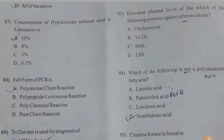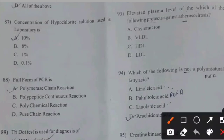Concentration of hypochlorite solution used in the laboratory — 10%, 80%, 1%, 0.1%. Right answer C: 1 percent.